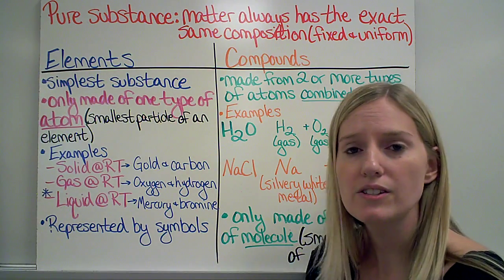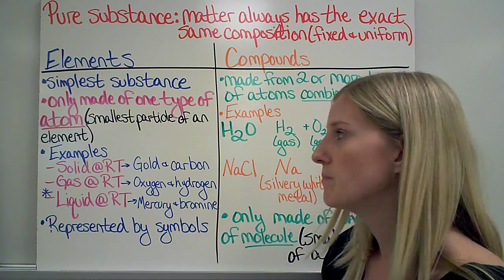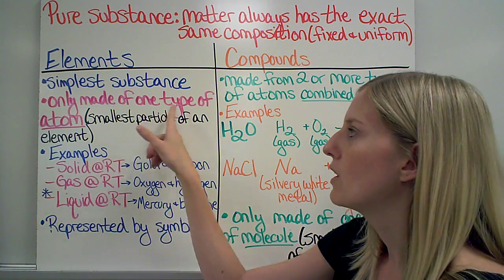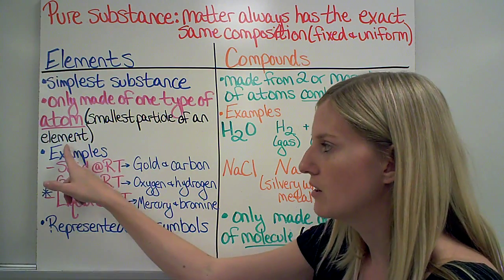The two types of pure substances are elements and compounds. Elements are just known as the simplest substance that we can have. It's what we have on our periodic table. They are only made of one type of atom. And to remind you, an atom is the smallest particle of an element.